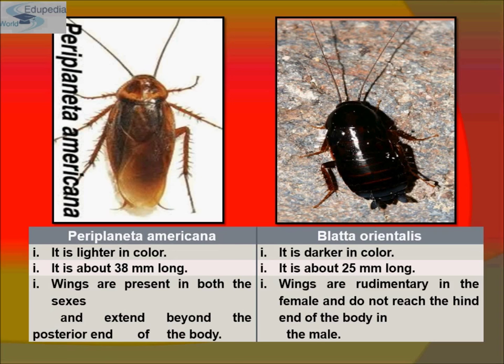Regarding wings: in Periplaneta Americana, wings are present in both sexes and extend beyond the posterior end of the body. In Blatta orientalis, wings are rudimentary in females — essentially vanished — but present in males, though they do not reach the hind end of the body.